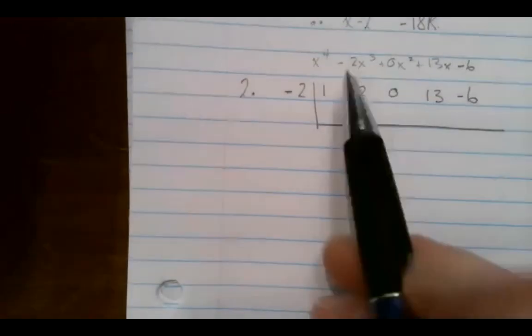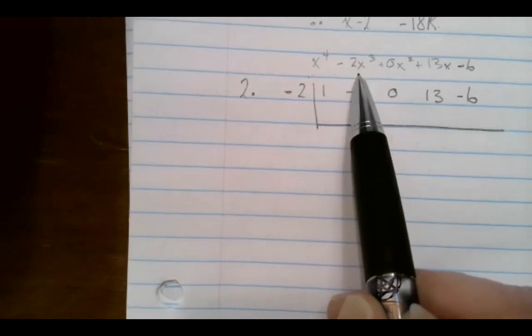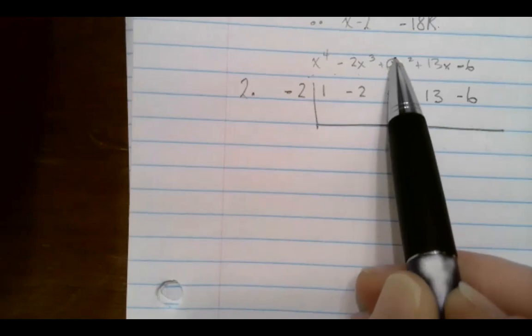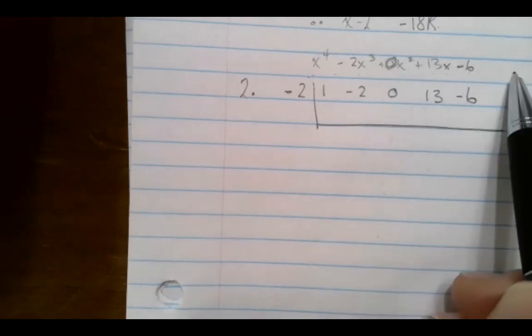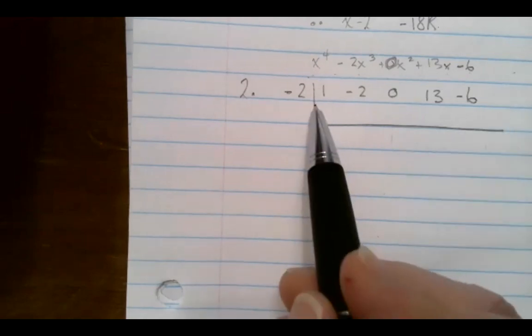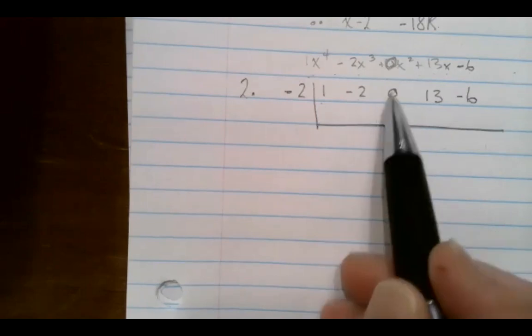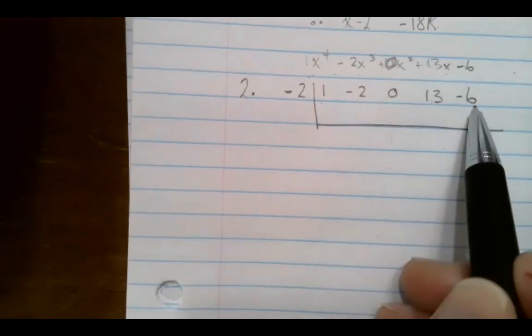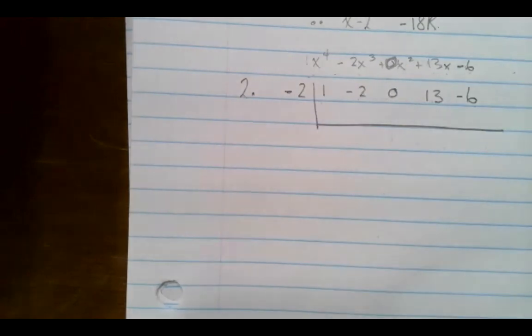Okay, so this was my polynomial. I had x to the fourth minus 2x cubed. I didn't have x squared, so I call it 0x squared plus 13x minus 6. So what I do is just write a 1 here, negative 2, 0, 13, negative 6. So these are just the numbers, but I didn't write the x squareds and the x's and all that.